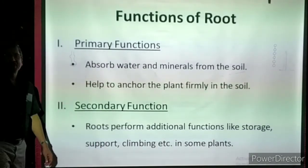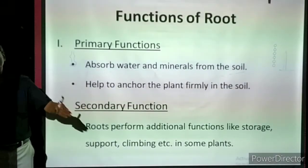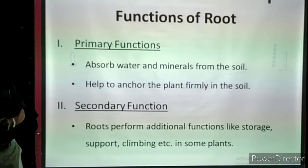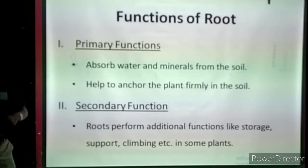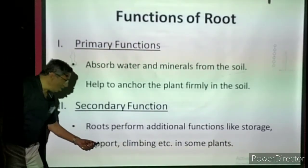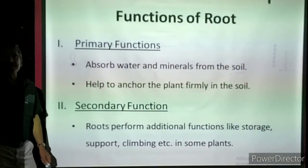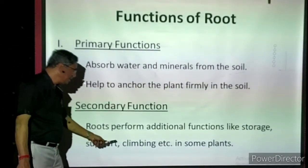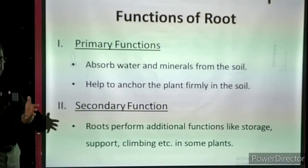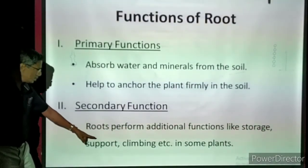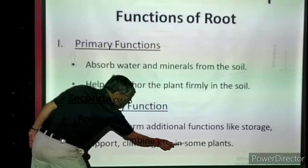Another additional function is support. In the banyan tree, from the branches, thin thread-like roots hang down, grow downwards, reach the soil, and hold it. As the tree becomes very old, these roots growing from branches bear the branches very well and give additional support to the tree, allowing it to live for a long period. In climbing plants, some special roots are useful for climbing on support.